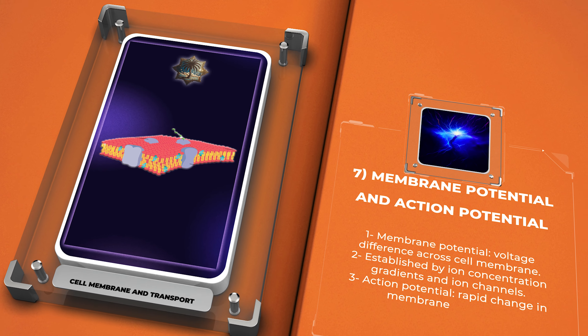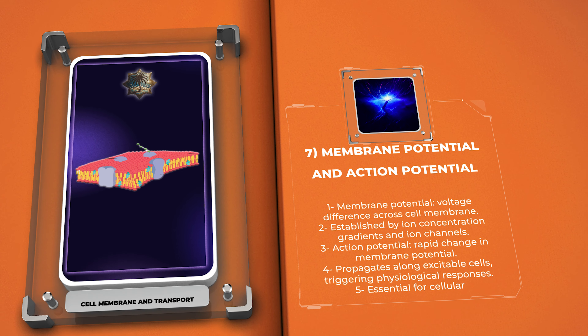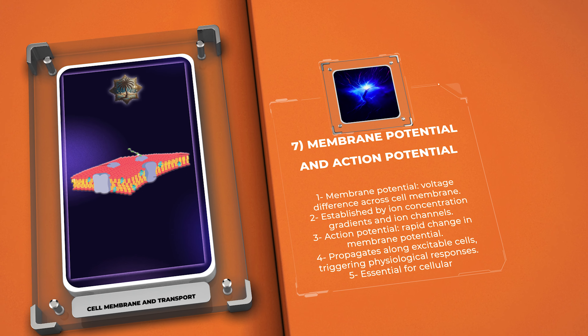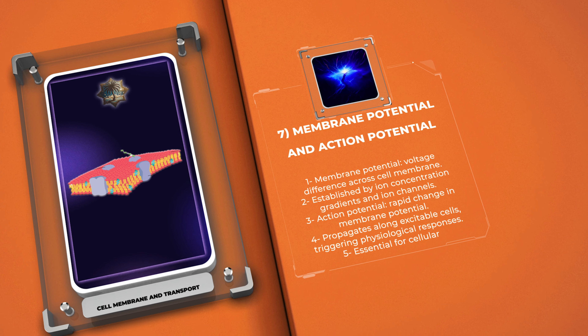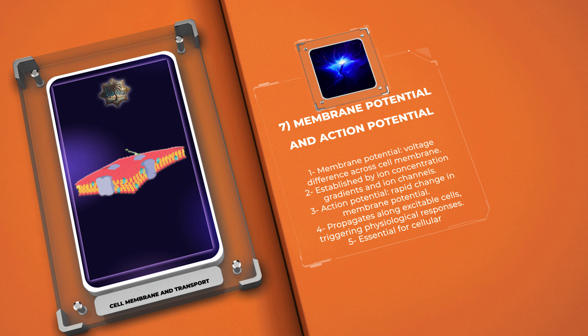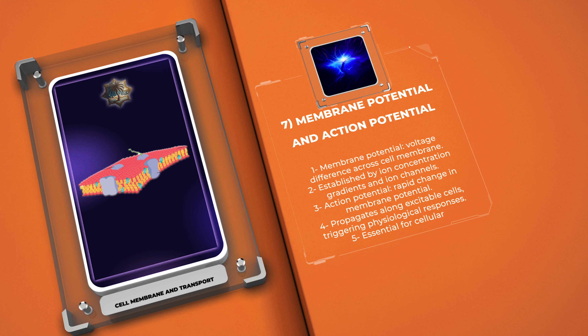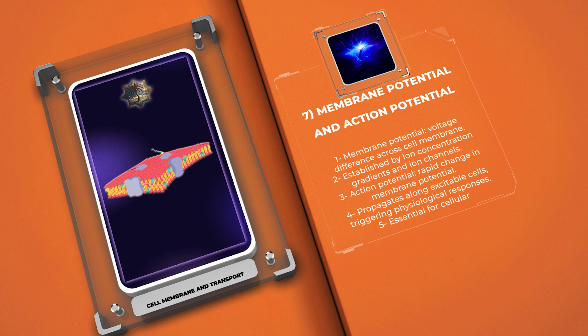Membrane potential and action potential are key concepts in cellular physiology, especially in the context of neuronal signaling. Membrane potential refers to the voltage difference across a cell membrane, established by ion concentration gradients and ion channels in the membrane. Action potential, on the other hand, refers to the rapid change in membrane potential that propagates along excitable cells such as neurons, triggering various physiological responses.